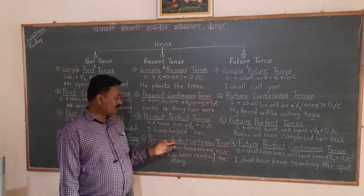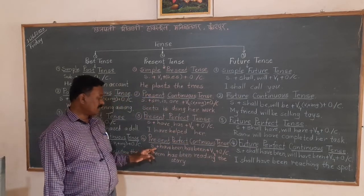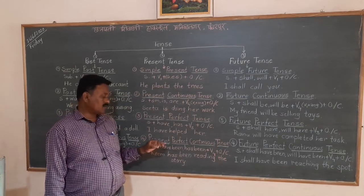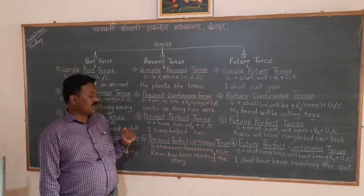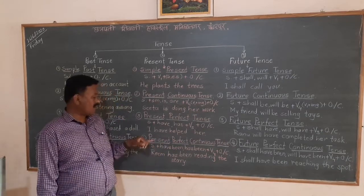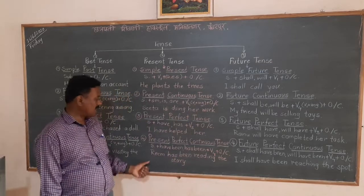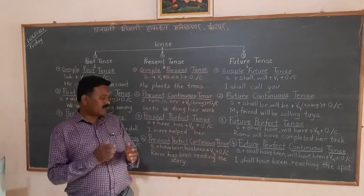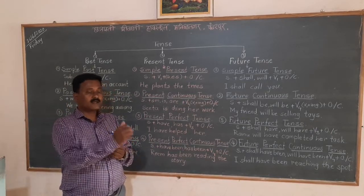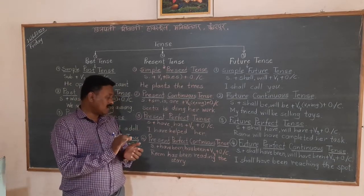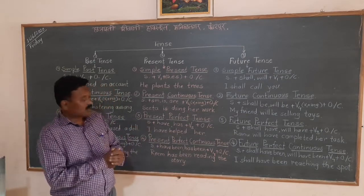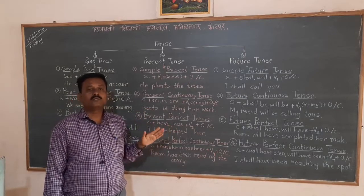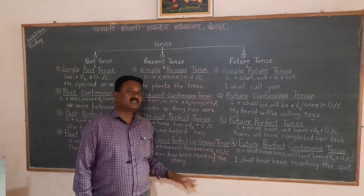The fourth is present perfect continuous tense. The construction is subject plus have been/has been plus V4 plus object or complement. The action is going on — it is completed to some extent but not totally completed, and it is happening in the present. Example: 'Rima has been reading the story.' Rima has completed her reading to some extent but has not totally completed it — the reading process is still going on. That is why present perfect continuous is used.